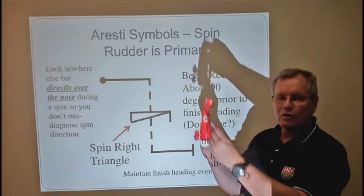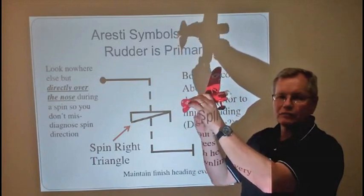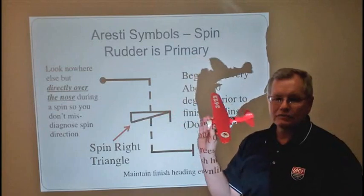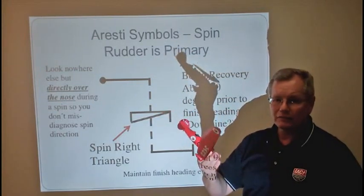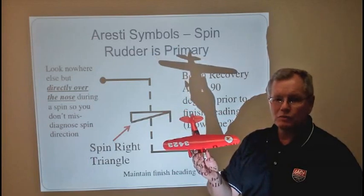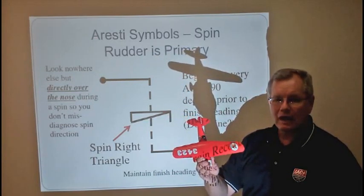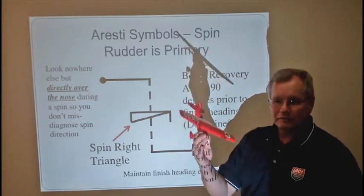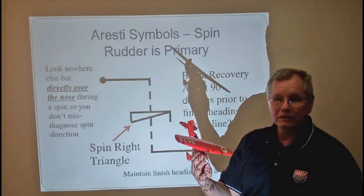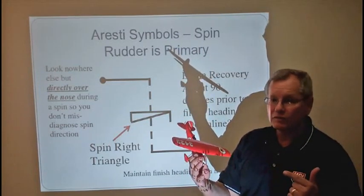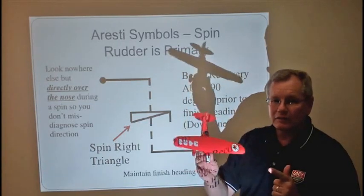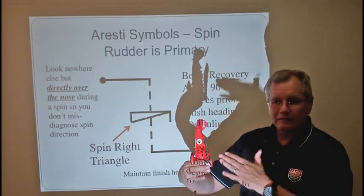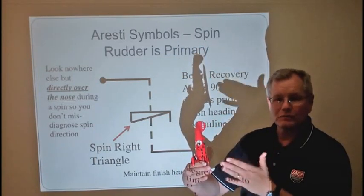Those are the judging standards. One of the things they're going to be looking for heavily is that after the spin enters, it must yaw all the way around and then stop. What they're watching for is whether you come out of the spin early and aileron the nose around for the rest of the spin. If you stopped 20 degrees early — with a point off for every 5 degrees — and then just dropped the nose and did a roll to get back on heading, that's going to be 4 points off. So you went from a 10 to a 6.